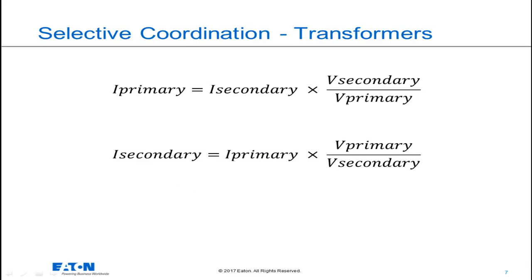These are the two important equations you need to know. Current reflected from the low voltage side of the transformer to the high voltage side of the transformer will always get smaller. Current reflected from the high voltage side of the transformer to the low voltage side of the transformer will always get larger.